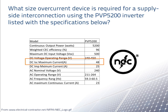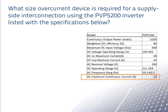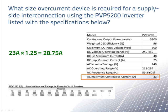We see that the last row of this chart lists AC maximum continuous current as 23 amps. We use this maximum current to find the overcurrent rating by finding 125% of the maximum current. 23 amps times 125% gives 28.75 amps.